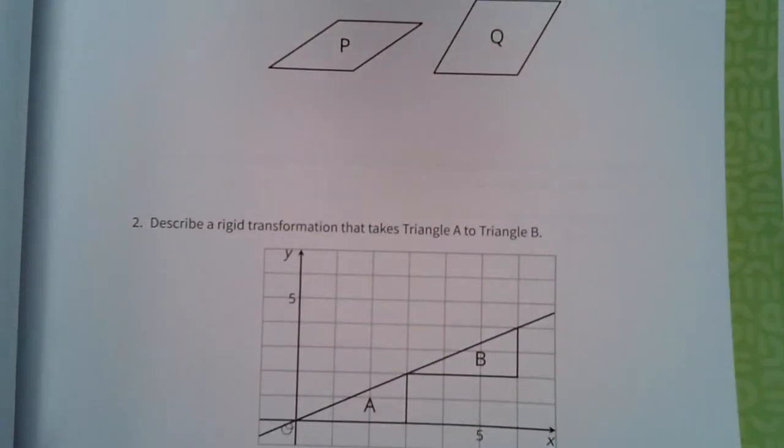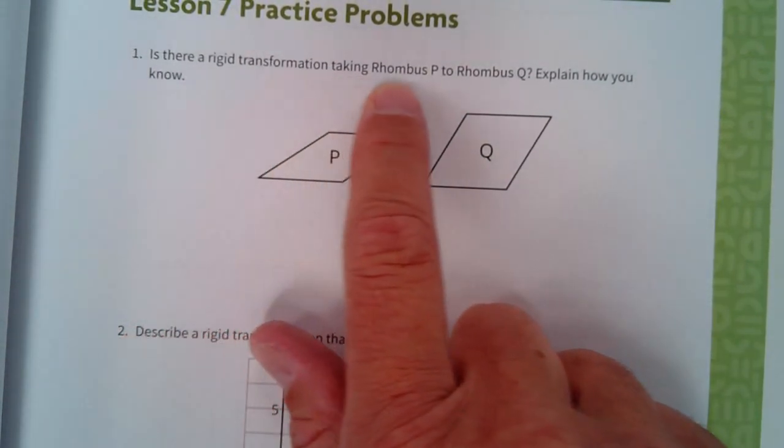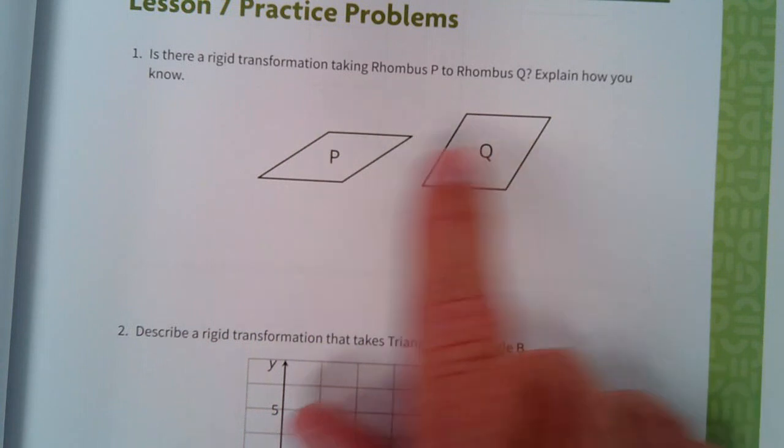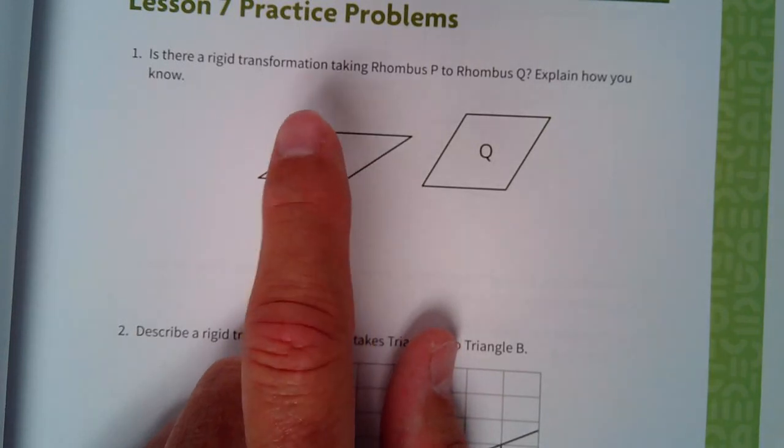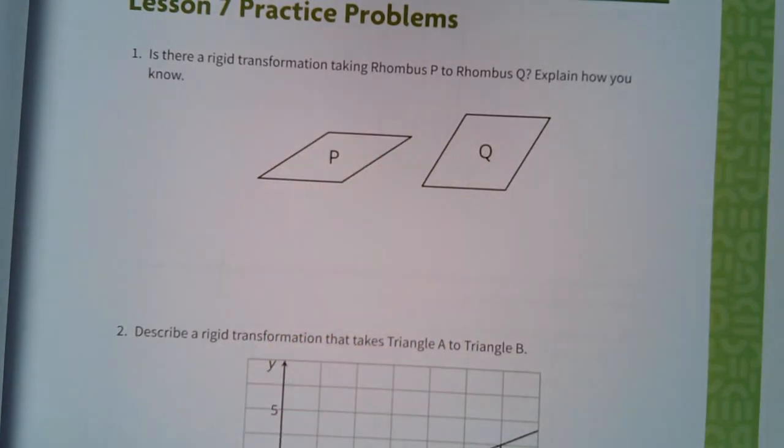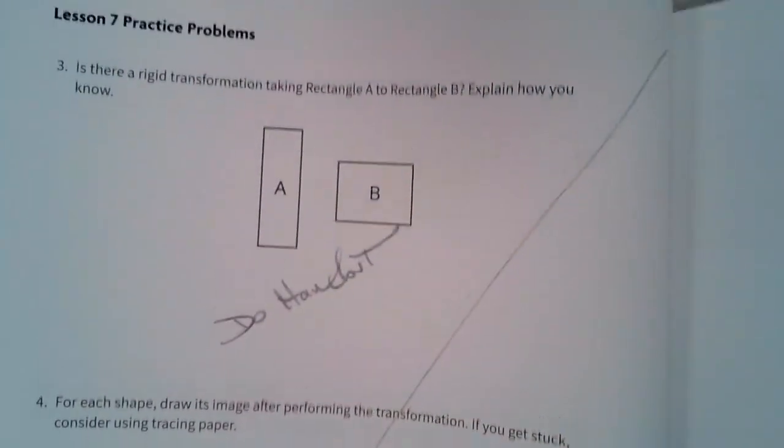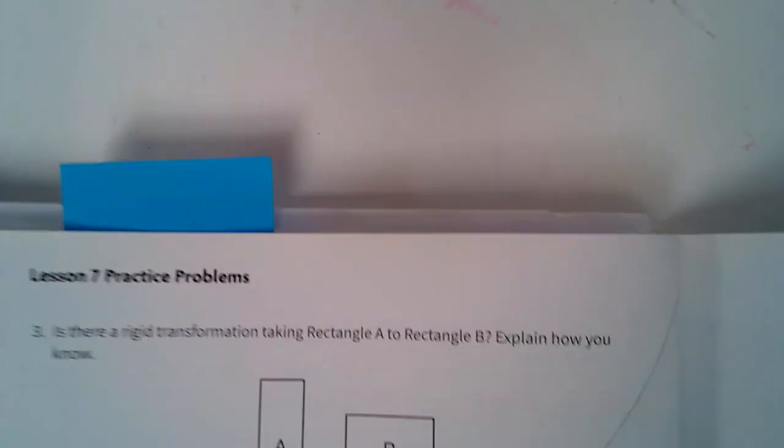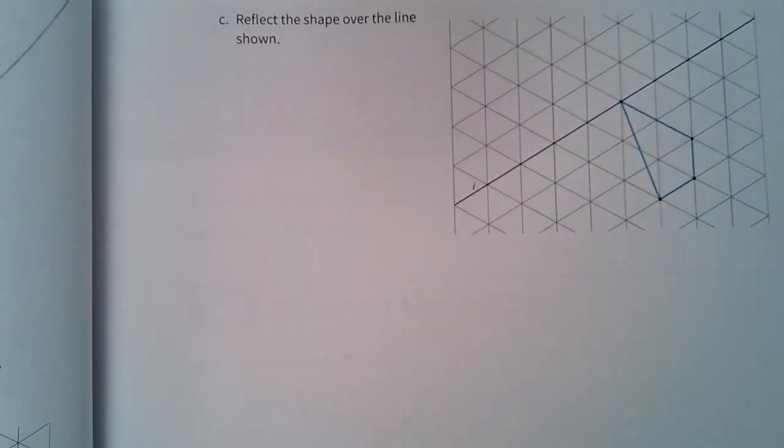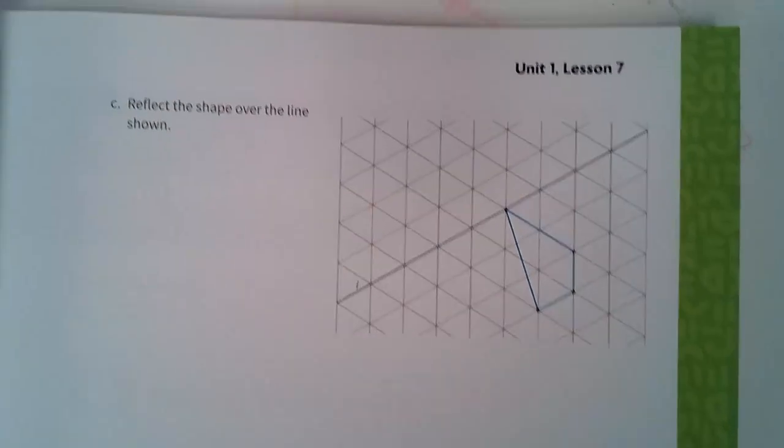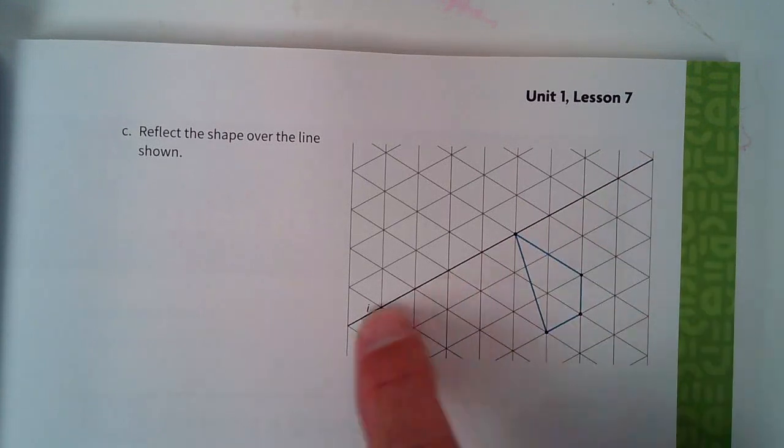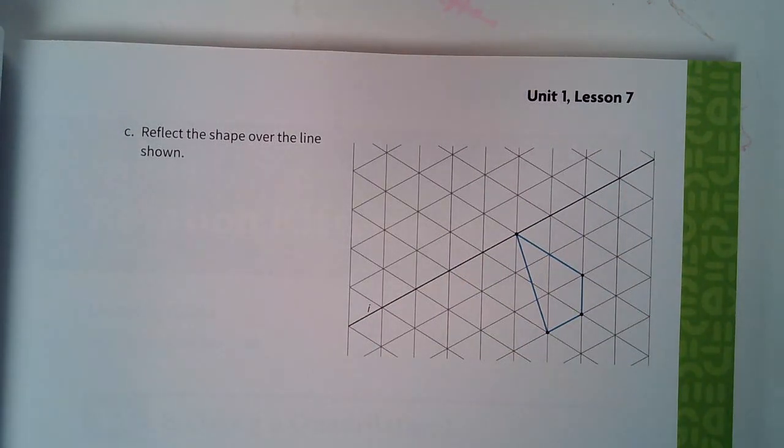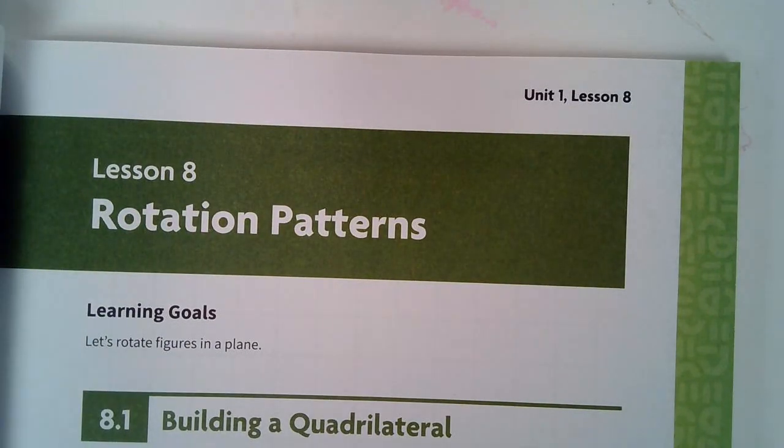So here's our practice problems. Is there a rigid transformation taking the rhombus P to Q, P to Q? Explain how you know. Is there a way to do a rigid transformation from P to Q? All right. That should be pretty obvious by now. And the next page, page 60, I already talked to you about this. This is the one where don't do it in the book. I'm going to give you the handout. And I do want you to do C. It says, reflect the shape over the line shown. Well, here's the shape. And here's the line. Looks like they call it I or J, whatever that is. So you would reflect it over that. And that would be it.